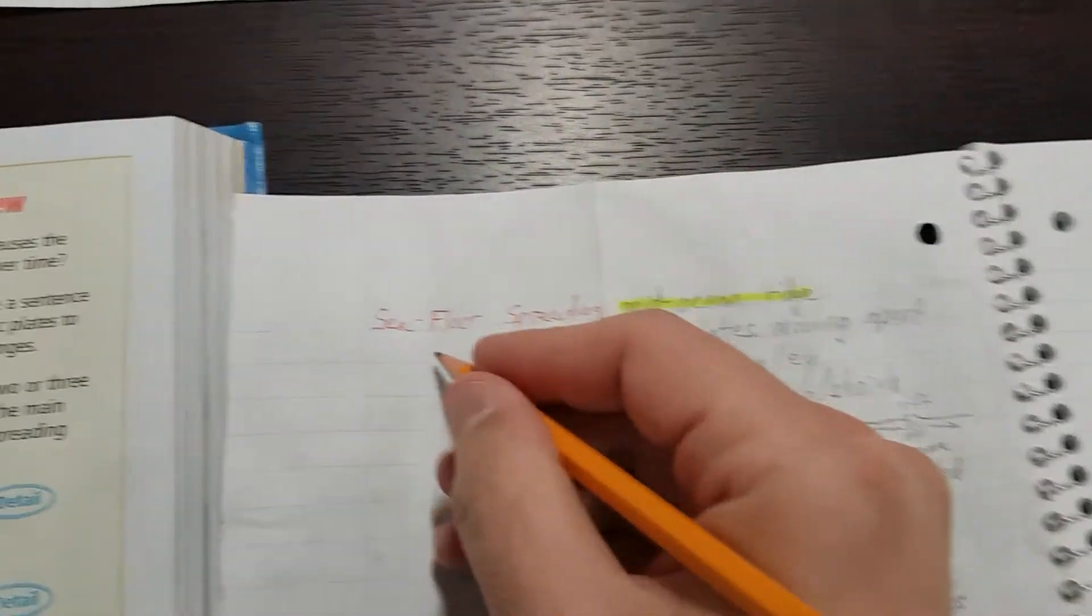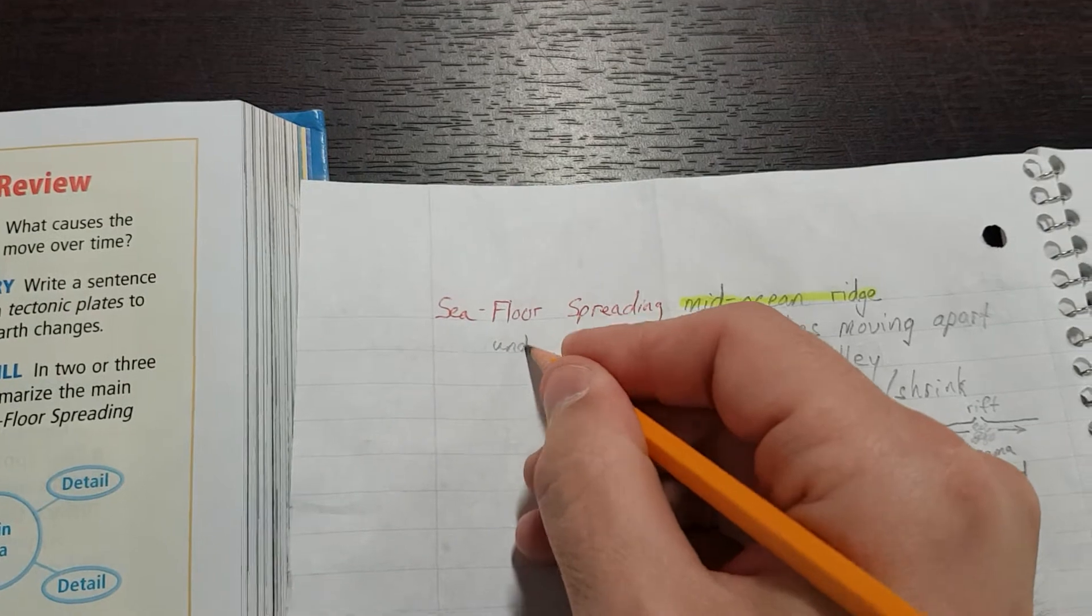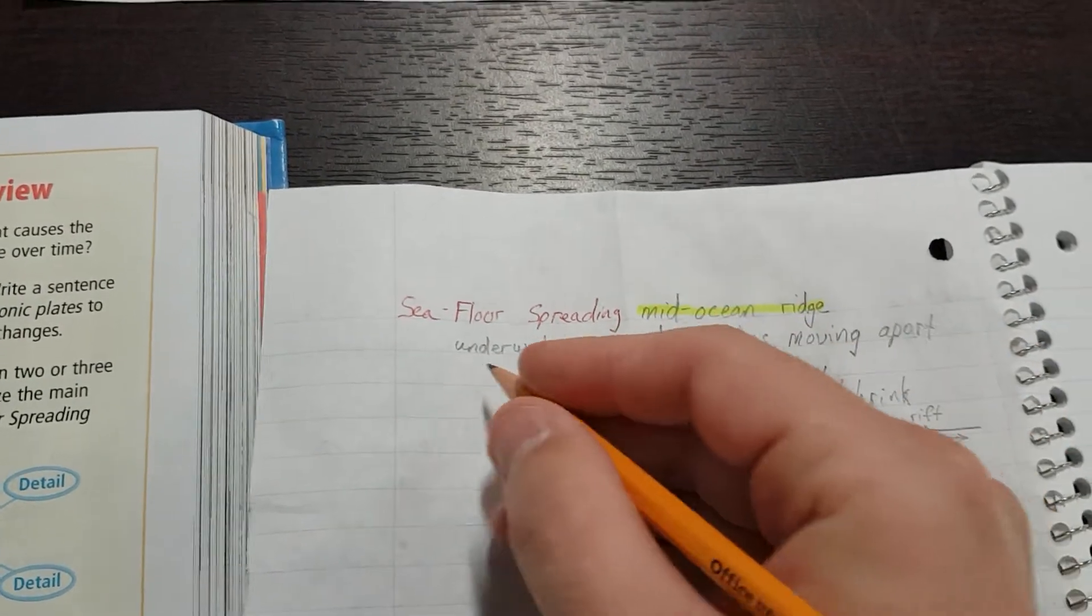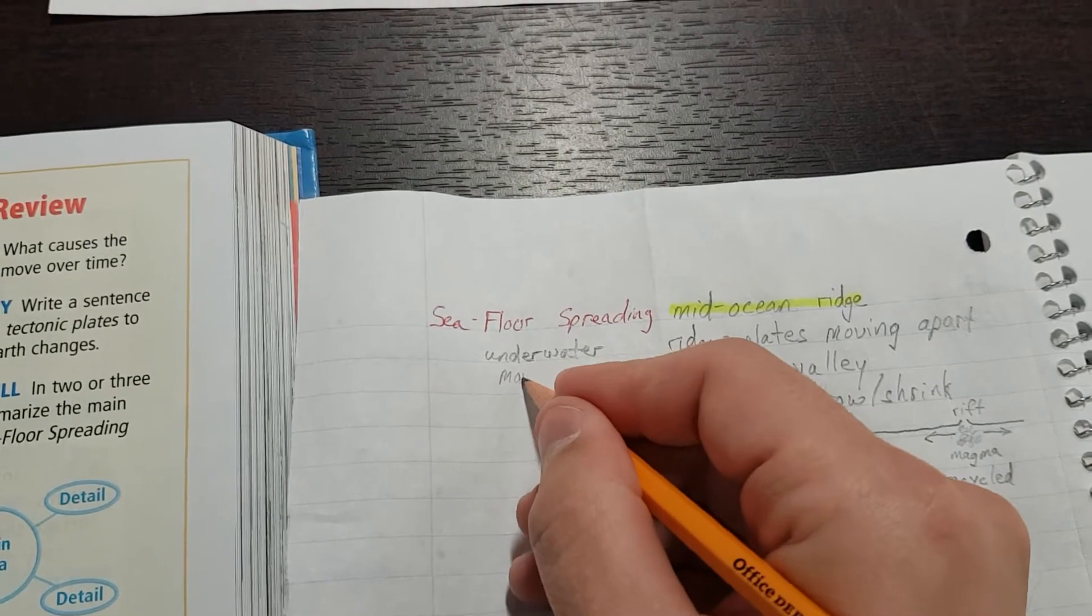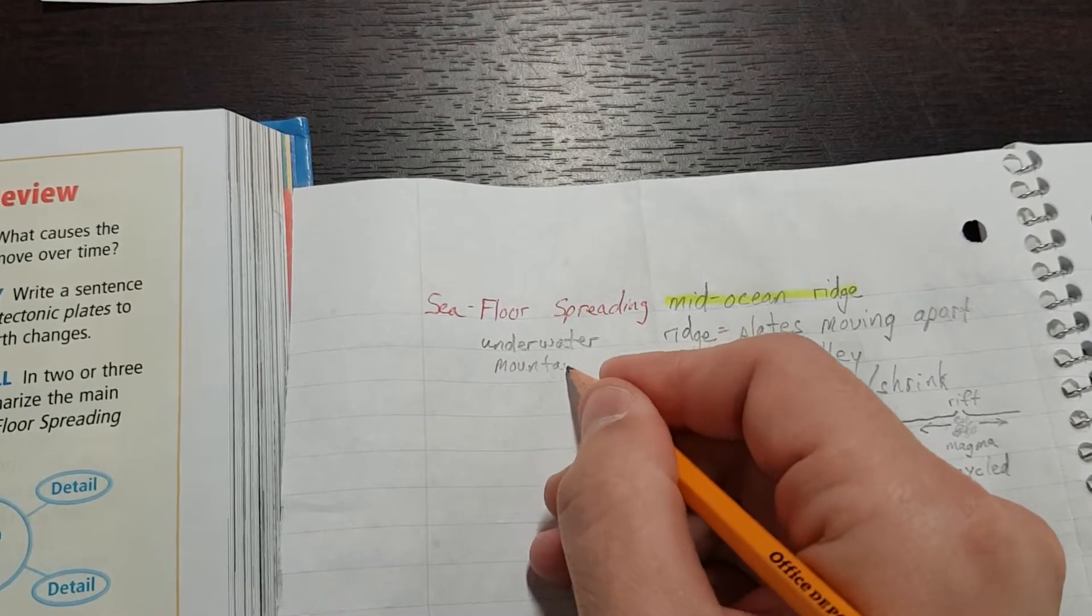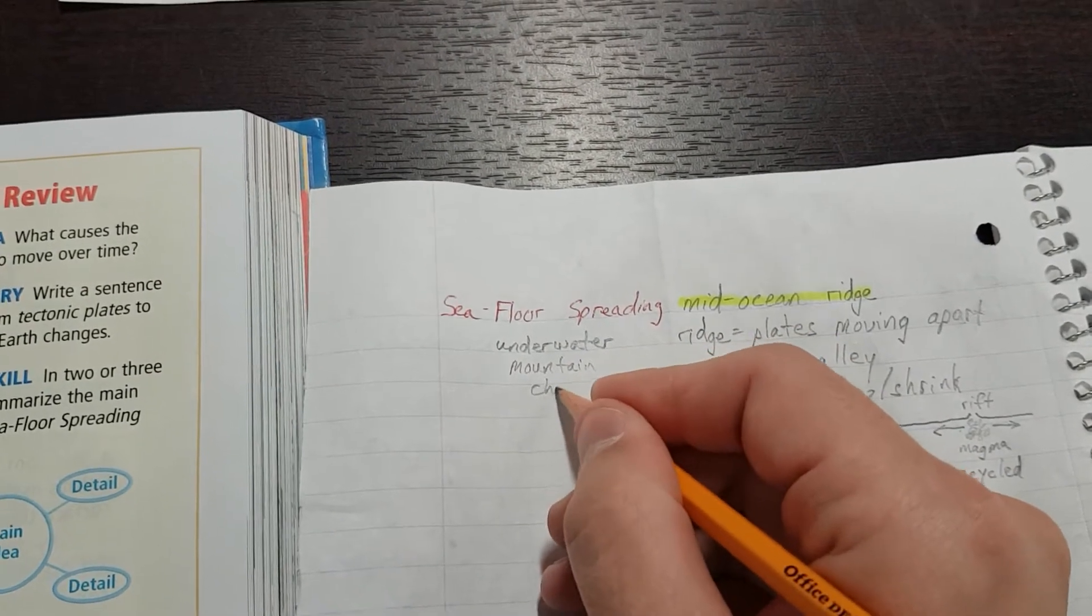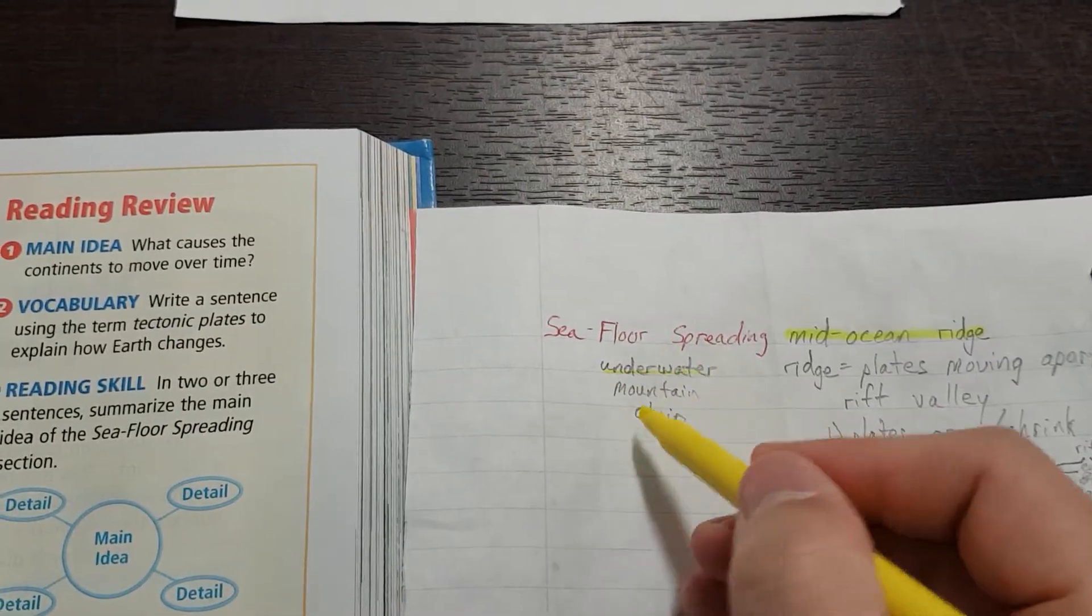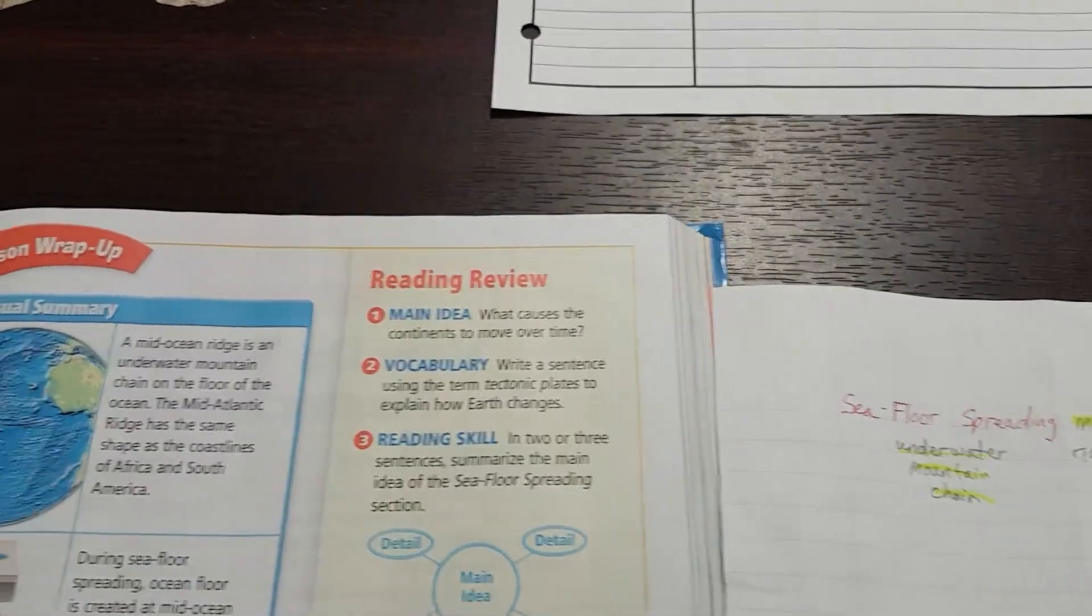We didn't say that. So, underwater, U-N-D-E-R, water, W-A-T-E-R, mountain, M-O-U-N-T-A-I-N, chain, C-H-A-I-N. Highlight that. Underwater, mountain, chain. On the floor of the ocean.